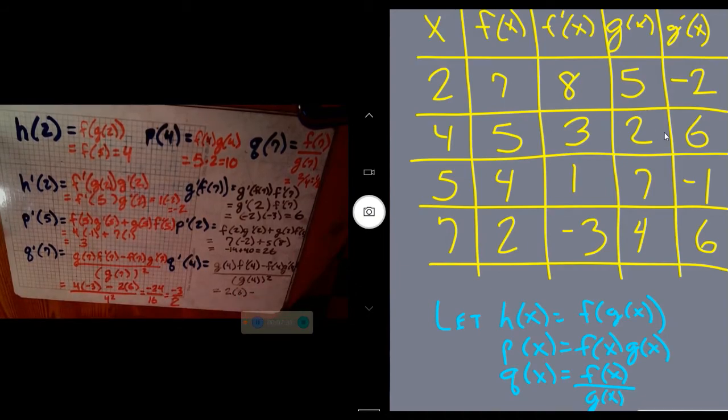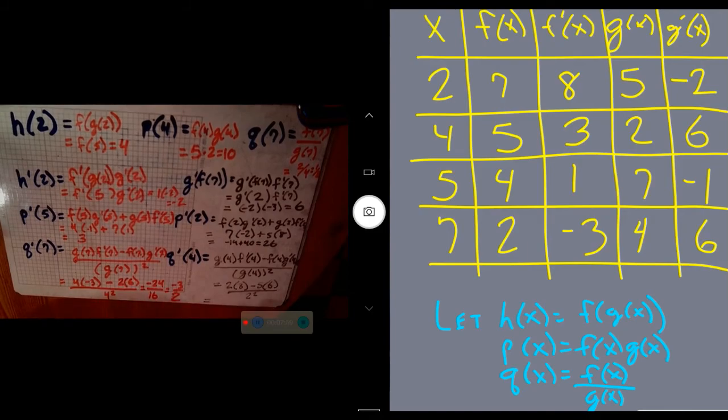Minus high d low. f(4) is 5. g'(4) is 6. All over low squared. g(4) was 2, so 2 squared for your denominator. 6 minus 30 becomes -24 divided by 4. So this is -6 as my answer.